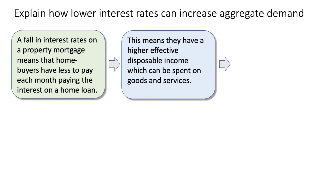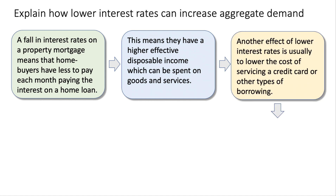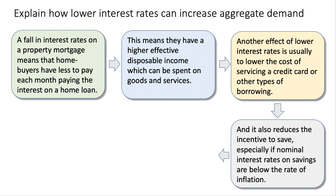Effective disposable income is the income after tax and welfare and essential payments such as utilities and mortgages. So mortgage rates going down means people have more income to spend. Another effect is also to bring down the cost of servicing interest payments on a credit card or perhaps taking out some other form of loan.